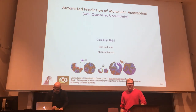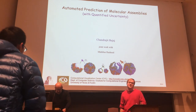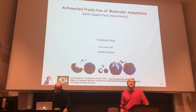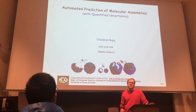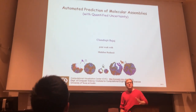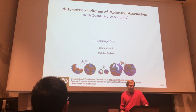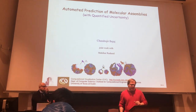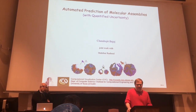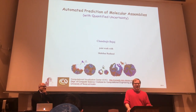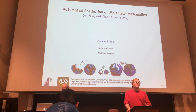When you look at Chandrajit's CV, one of the most impressive things that strikes you right away is his very high h-index, about 56, and an enormous number of citations. He works in many different fields. Today he will talk about automated prediction of molecular assemblies with quantified uncertainty. These things are inherently difficult to predict and inherently uncertain, so the ability to quantify this uncertainty is even more impressive.